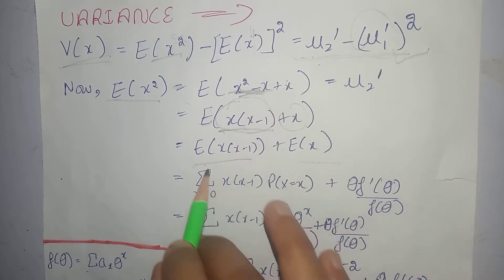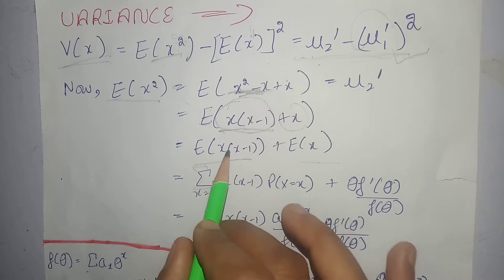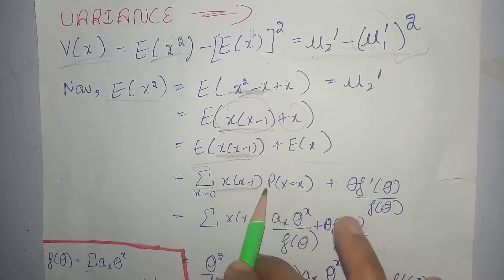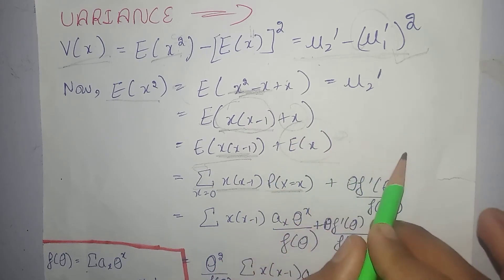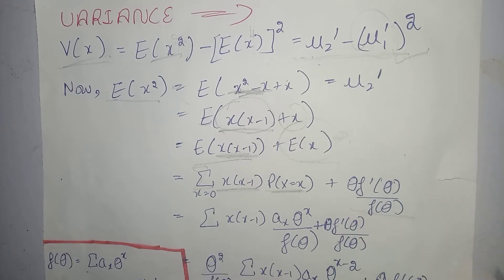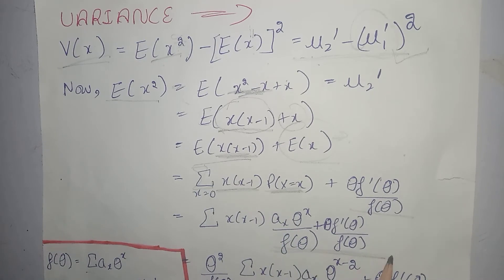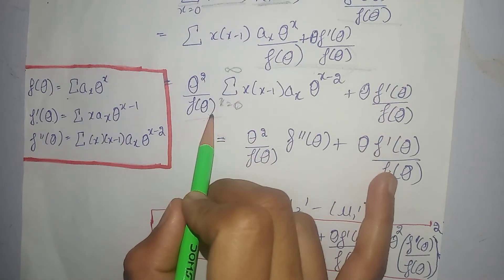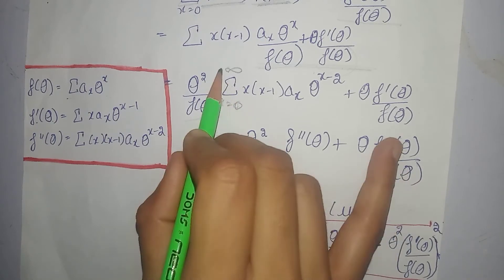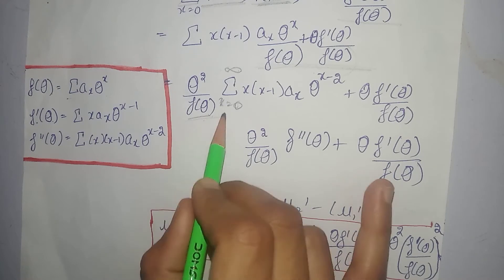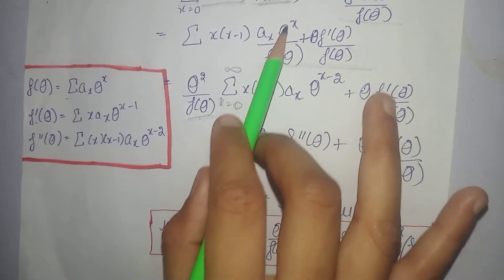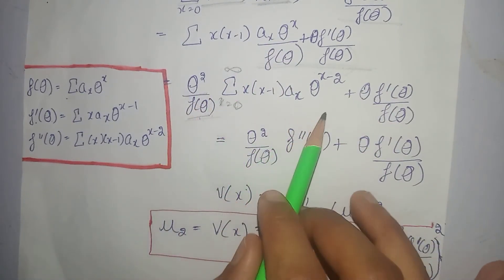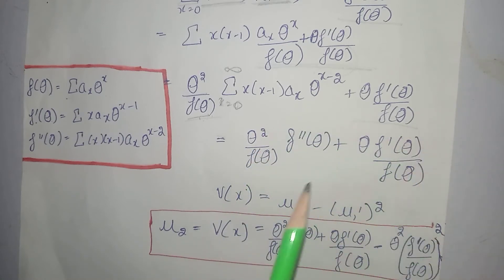Expectation ko hum kaise kholte hain? Obviously, first of all summation over all values of x, saath mein jis term ki expectation nikaal rahe hain, saath mein PMF of the power series distribution. Now expectation of x, that is mu1 dash, that is mean — uski value hum ne already nikaal hi hui thi, uski value hum ne yahan put kar di. PMF of power series distribution hum ne yahan put kar diya. Summation mein se f(theta) bahar nikaal liya, because f(theta) mein koi bhi x nahin aa raha tha. Theta raised to power x mein se hum ne theta raised to power 2 bahar nikaal liya; andar theta raised to power x minus 2 raha gaya. Yeh term as it is rahi.